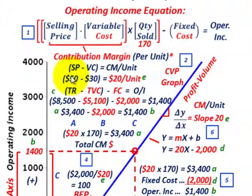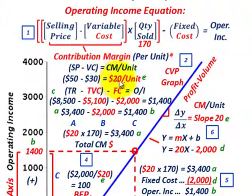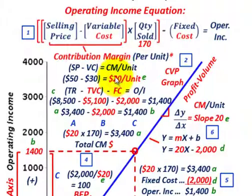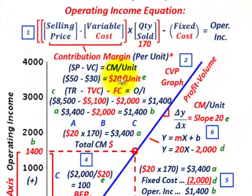For our example, we have a selling price of $50 per unit and a variable cost of $30 per unit. The difference gives us our contribution margin of $20 per unit. So what we're saying is that each unit we sell is going to have $20 going towards operating income.